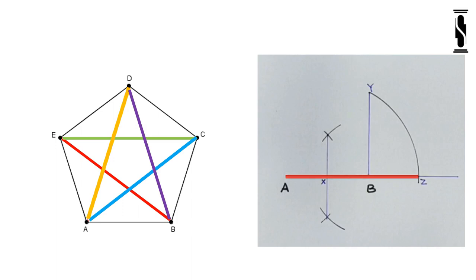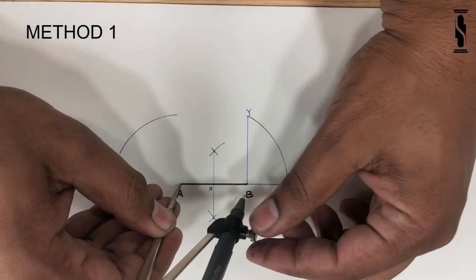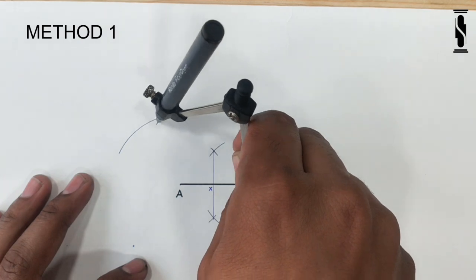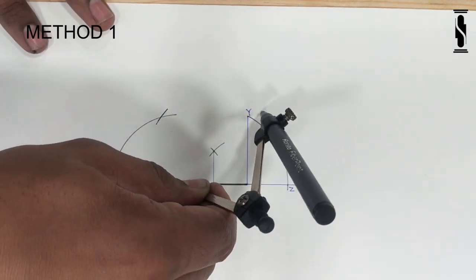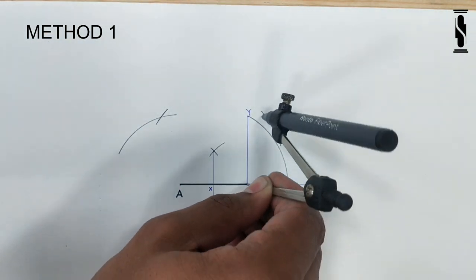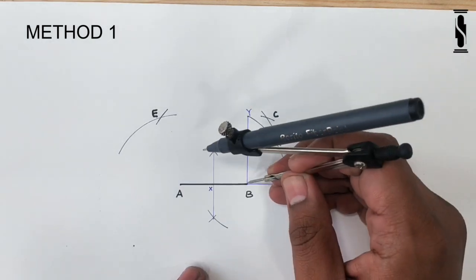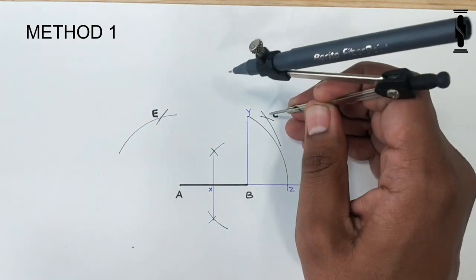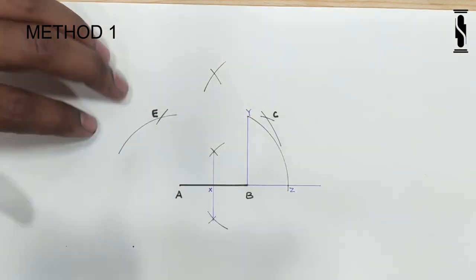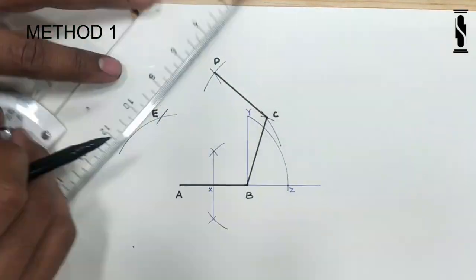Now, to construct the pentagon: mark an arc with center A and radius equal to AB. Mark another arc with radius equal to AZ with B as center; this arc will cut the previous arc on point E. Now mark an arc with radius equal to AZ and A as center. Mark another arc with radius equal to AB with B as center; this arc will cut the previous arc on point C. Now mark an arc of radius equal to AB with center C, and another arc of radius equal to AB with center E; this arc will cut the previous arc on point D. Now join B to C, C to D, D to E, and E to A to complete the pentagon.